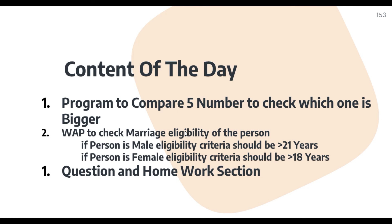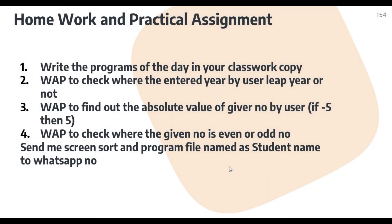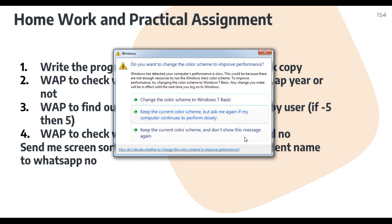We have learned today: how to compare five different values to check which one is bigger, and how to check marriage eligibility by gender and age. Now for homework: first, write today's programs in your class copy. Second, write a program to check whether a year entered by the user is a leap year or not — 365 days is a normal year, 366 days is a leap year.